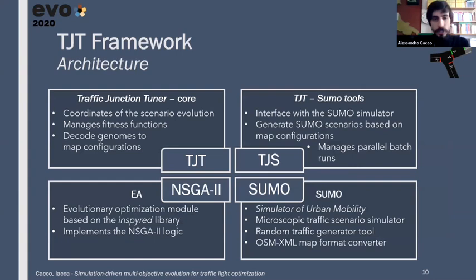So, the traffic junction tuner framework is composed of these four modules. The core module orchestrates the evolution of the individuals and their deployment in form of simulation maps. The evolution is carried out by the evolutionary algorithm module, which implements the NSGA-II logic based on the DEAP Python library. Then the SUMO tools modules interface with the simulator, generating the files needed by the simulator, launching parallel batches of simulation, and querying the simulator for the information which are used for the fitness calculation. Last, we have the simulator itself.